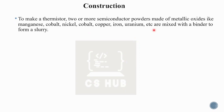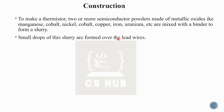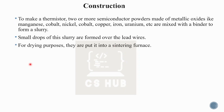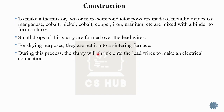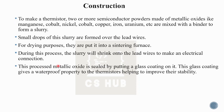The metallic oxides — cobalt, nickel, manganese, copper, iron — are mixed to form a slurry. Small drops of this slurry are formed over the lead wires. The bead is then shaped, dried, and placed in a sintering furnace. The metallic oxide is then sealed by putting a glass coating on it.